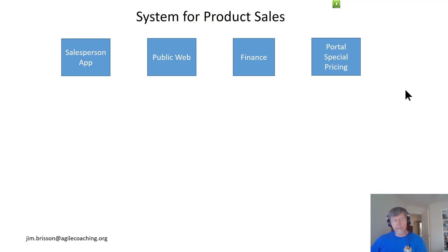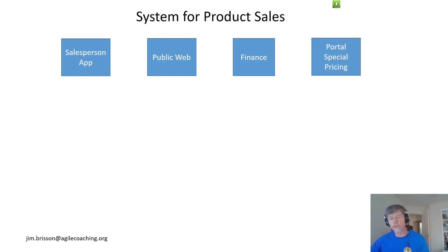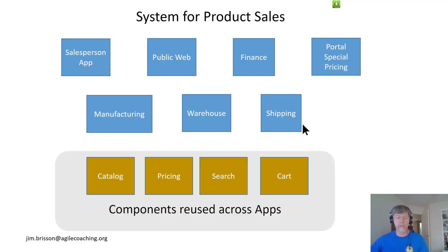So this is a system for product sales. You see there's a salesperson application, and there's also a public web application for everybody to use. There's a finance application, so you could pay in three easy payments at $19.99 each. And there might be a portal for special pricing for special customers — maybe the government, big customers. You also have to manufacture your product, so that needs software. You have to warehouse it after it's manufactured, and you have to be able to ship it.